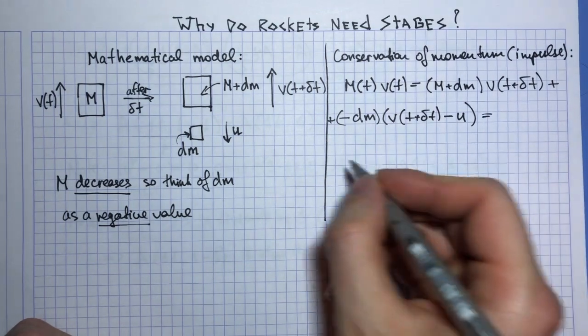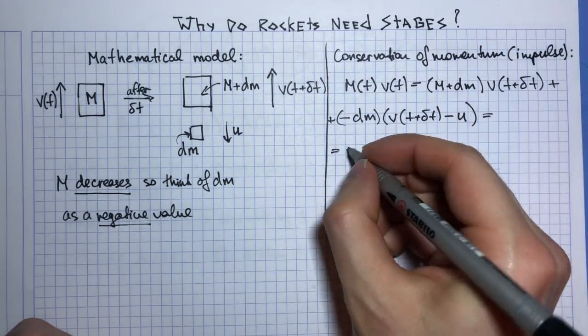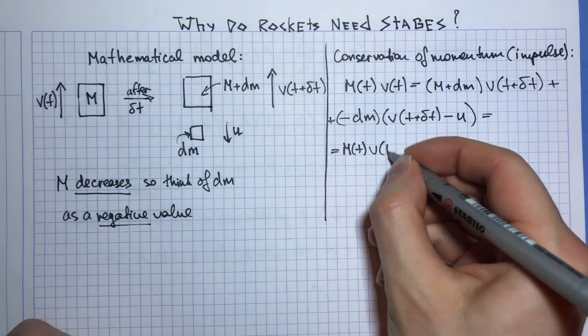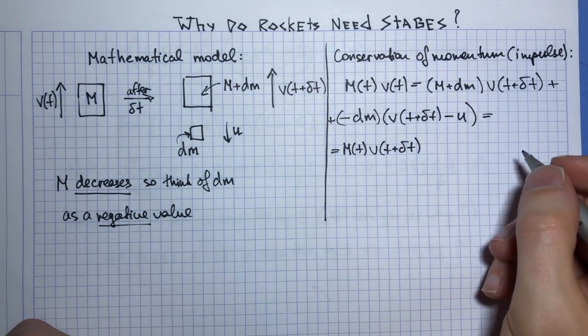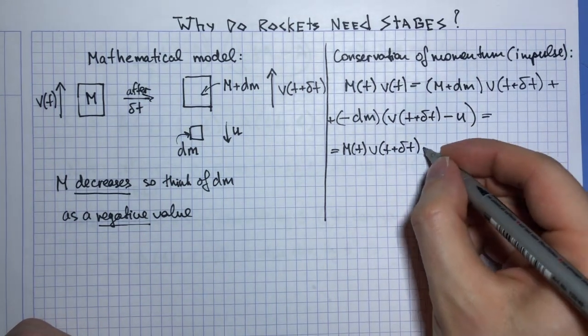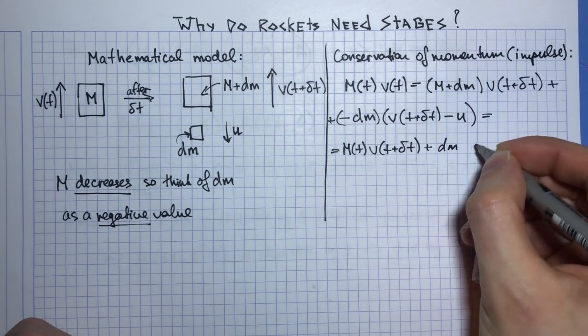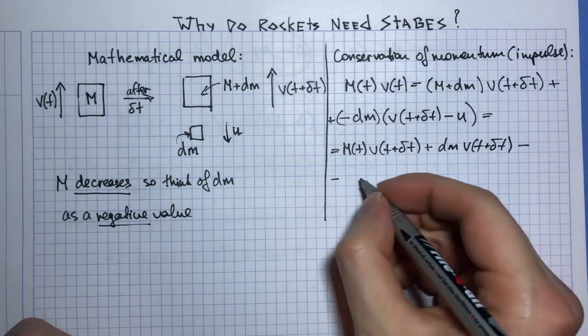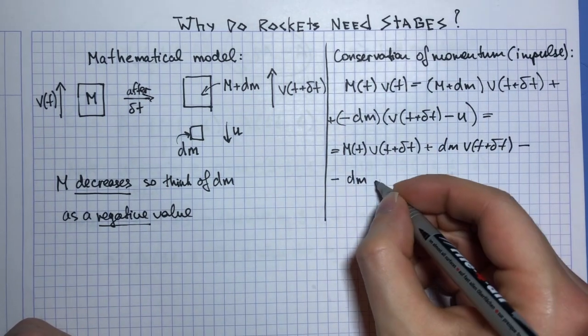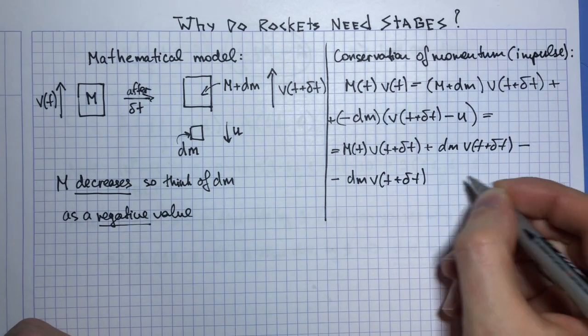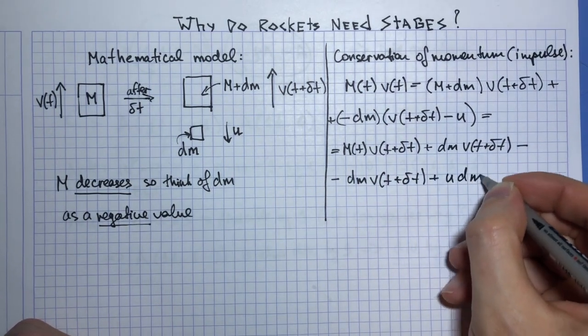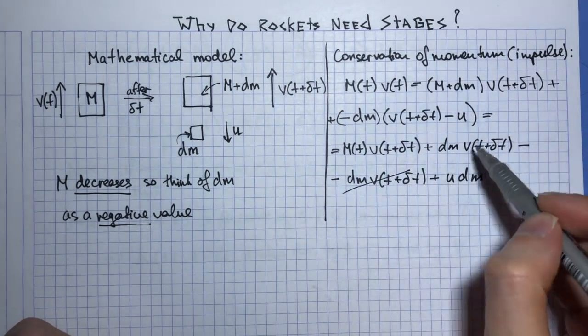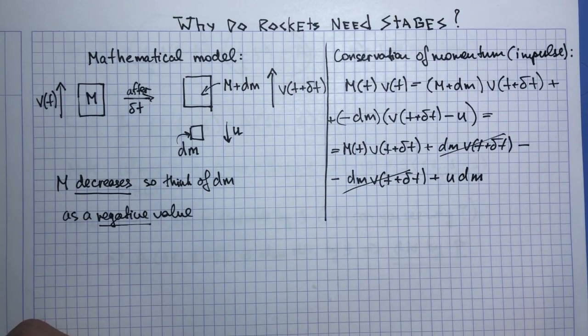Now if I just expand the brackets on the right hand side, I get M(t) times v(t + delta t) plus delta m times v(t + delta t) minus delta m times v(t + delta t) plus u dm. So now I have these two terms the same, so I can cancel them out.